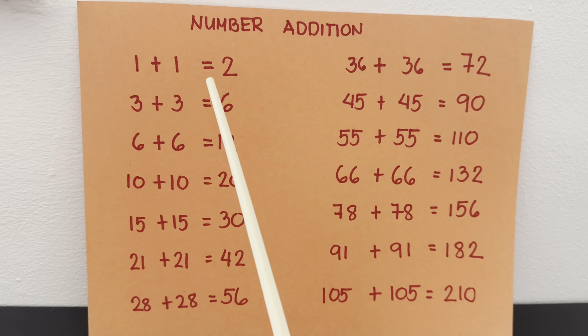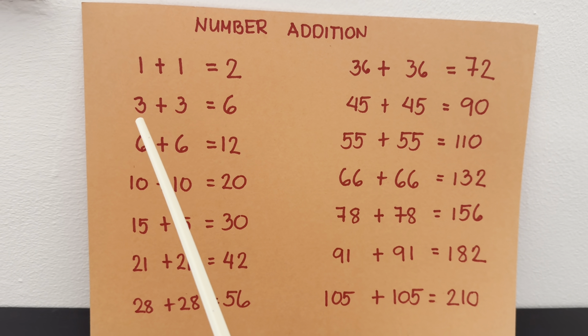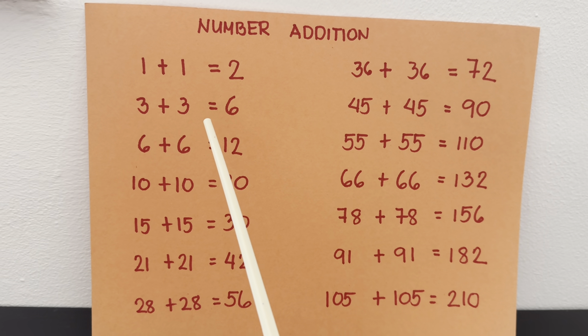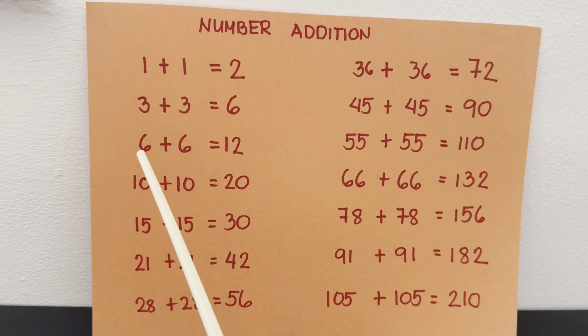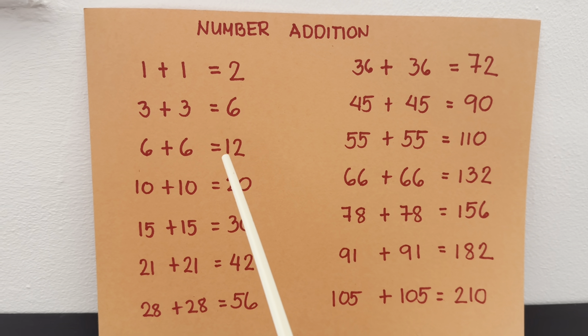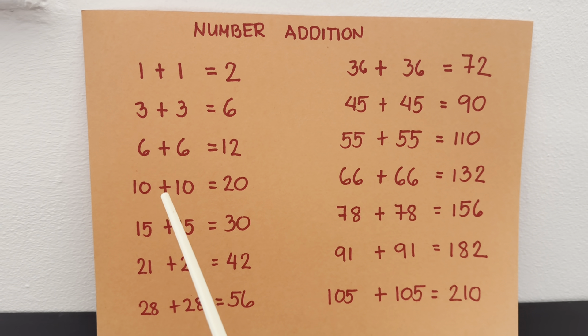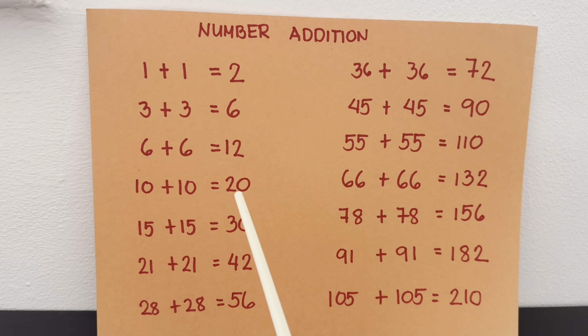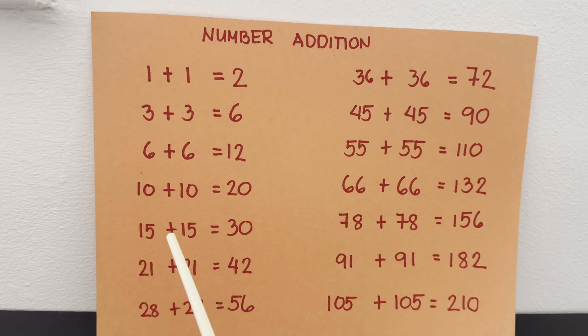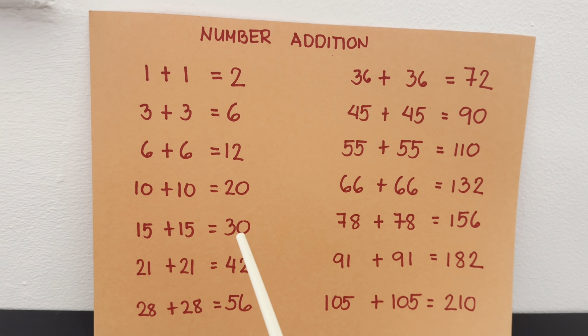1 plus 1 equals 2, 3 plus 3 equals 6, 6 plus 6 equals 12, 10 plus 10 equals 20, 15 plus 15 equals 30.